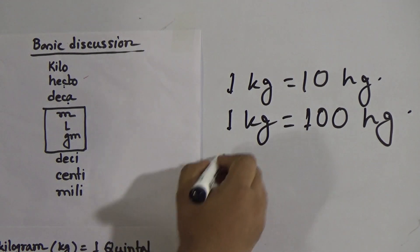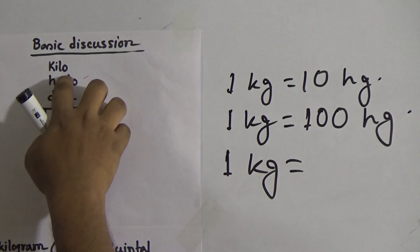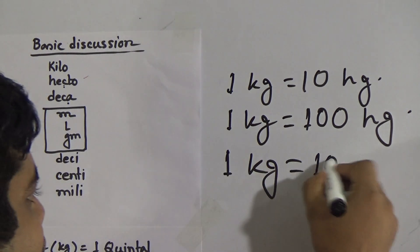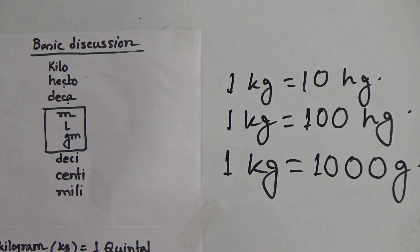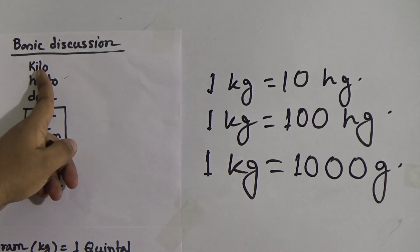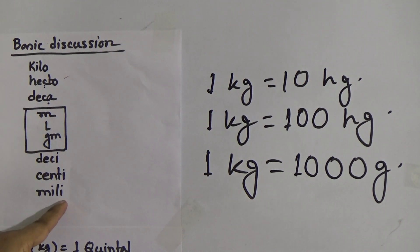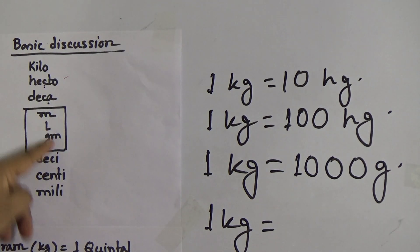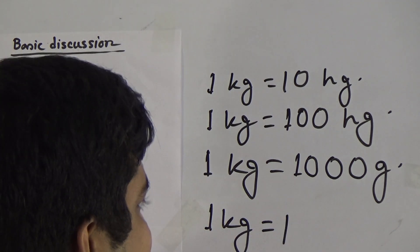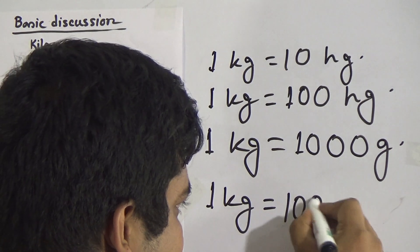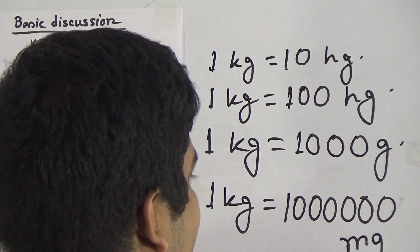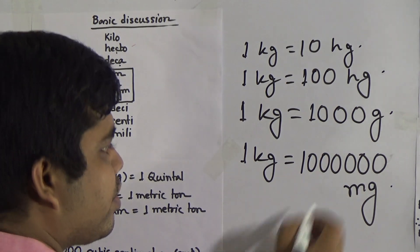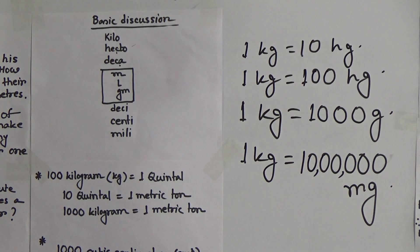Similarly, one kilogram equal to how many grams? From kilo to gram is three steps, so we write one followed by three zeros: 1000 grams. And one kilogram equal to how many milligrams? That is six steps, so we write one followed by six zeros — that means one kilogram equals 10 lakh milligrams, which is 1,000,000 milligrams.